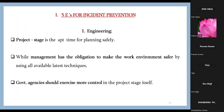Safety starts at the design stage. The project stage is the apt time for planning safely, and management has the obligation to make the work environment safer using all the latest techniques. Government agencies should exercise more control at the project stage itself. Technology should be updated and given preference over outdated methods — even if costlier. The highest level of safety can only be achieved through applying engineering controls.